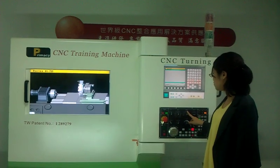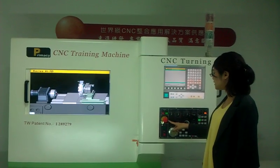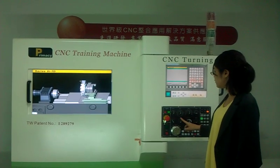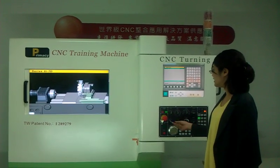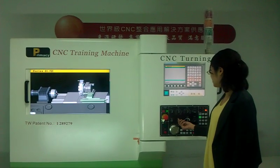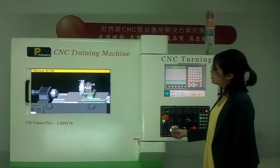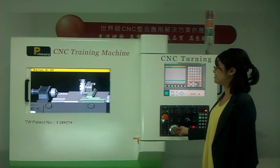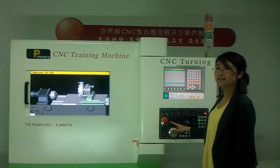Another one is the handwheel. We can choose the X axis or Z axis, and we have speeds of 1, 10, and 100. Now I show you the Z axis at speed 100 — it's moving. Then I turn to X axis and it's moving as well.